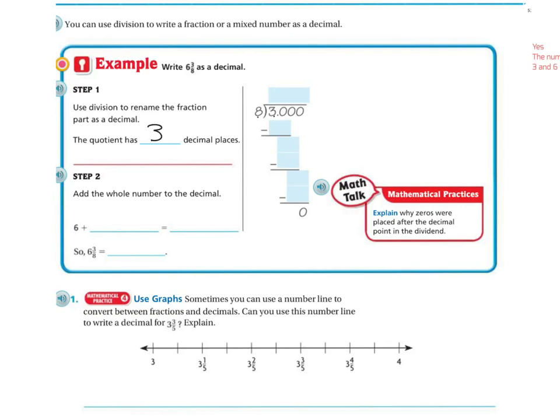So 8 can't go into 3, but it can go into 30. It goes into 30 three times. 3 times 8 is 24. I subtract. I get 6. I bring down a 0. 8 goes into 60 seven times. 7 times 8 is 56. I subtract. I get 4. Bring down my 0 again. Now I have 8 going into 40, which goes in 5 times. So if you're going to add the whole number to the decimal, we have 6 plus 0.375, which equals 6.375. So 6 and 3 eighths is going to be 6.375.